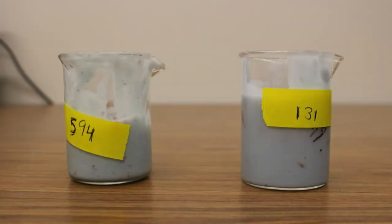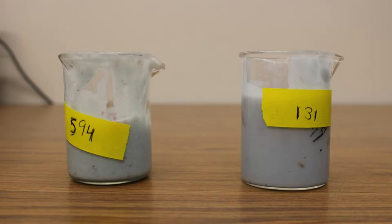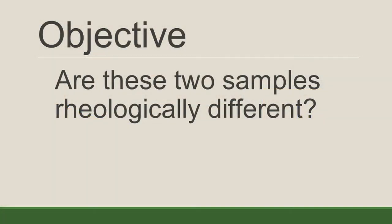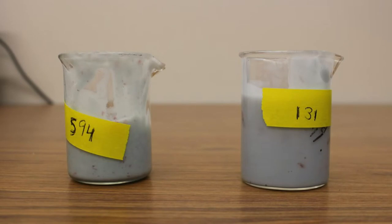We were given two samples, labeled 594 and 131, and asked: are these samples rheologically different? To answer this question, we were given access to a couple of rheometers and a Brookfield viscometer, and given three hours to provide evidence to prove if the samples were rheologically different or similar. As part of this video, we will walk you through the tests and analysis that we went through to answer this question.